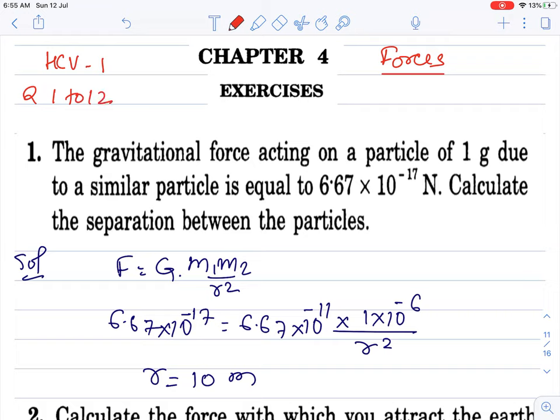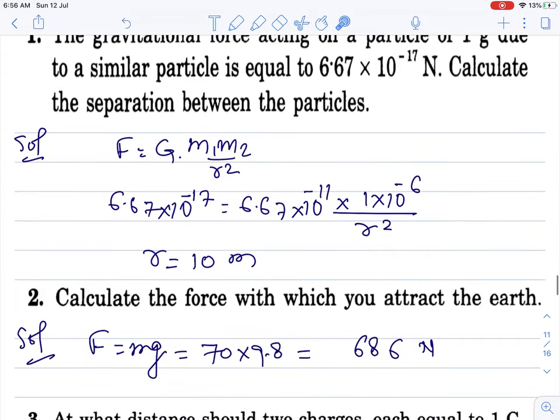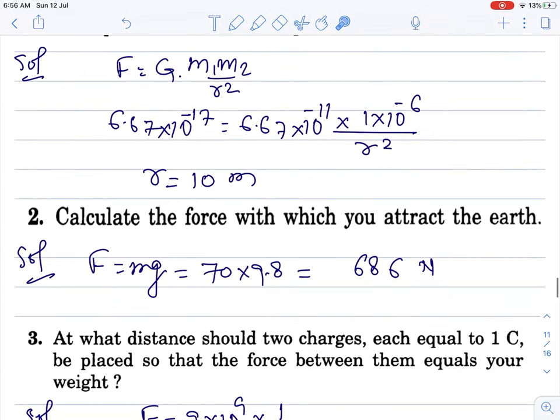Now we will see question number 1. The gravitational force acting on a particle of 1 gram due to a similar particle is equal to this much. Calculate the separation between them. So gravitational force formula is F equals G m1 m2 by r square. G ki value 6.67 into 10 to the power minus 11 SI unit. F is given, G ki value learn karni padegi. Masses are given, convert masses to SI unit. Putting the value and solving, direct formula based question.